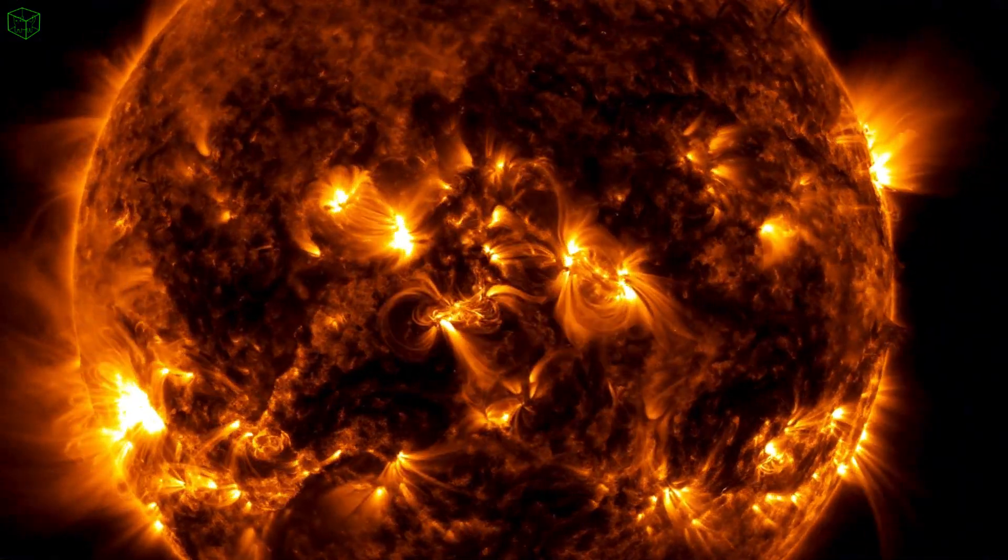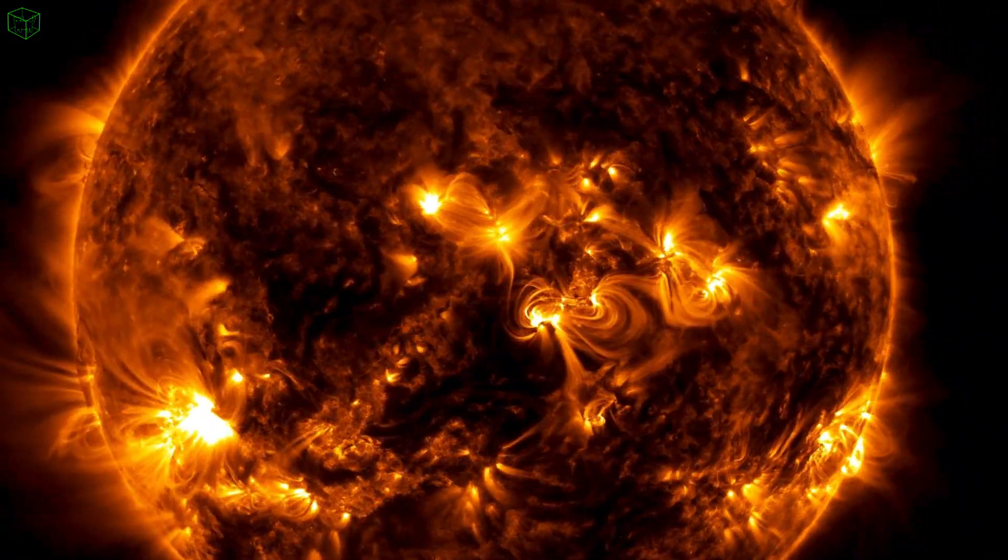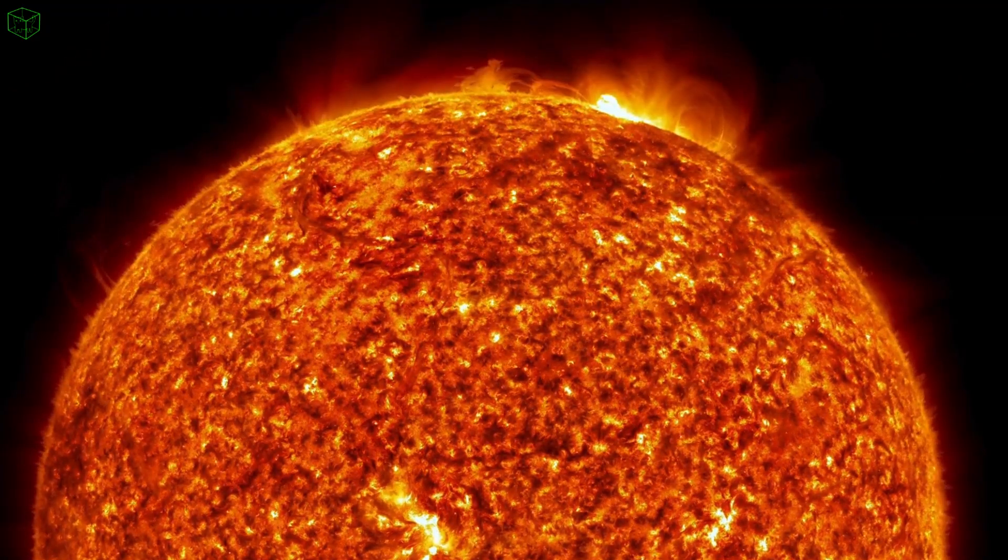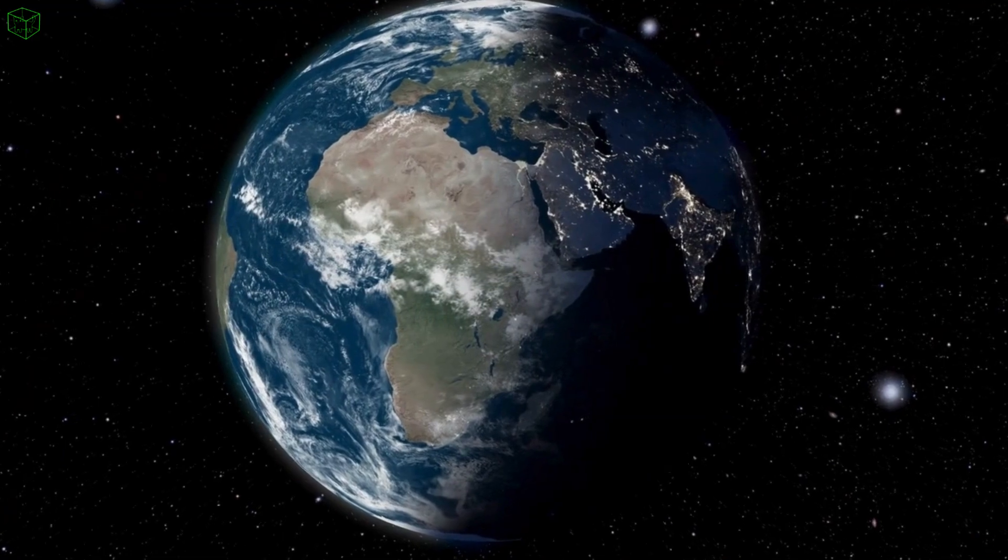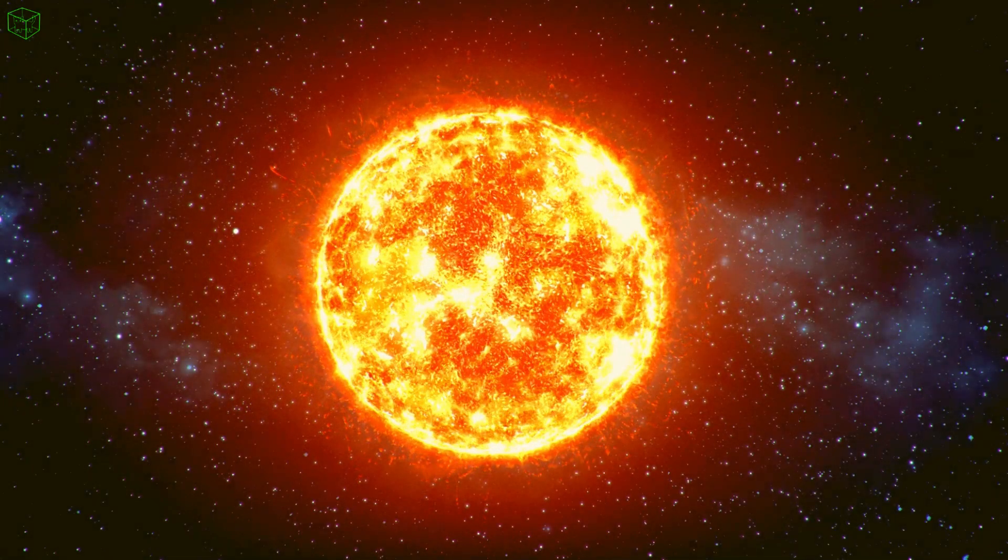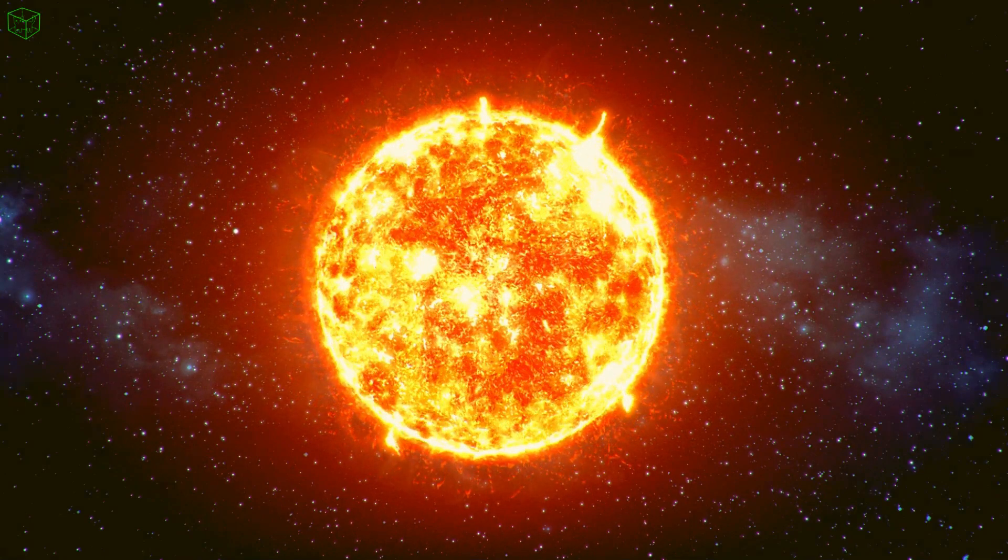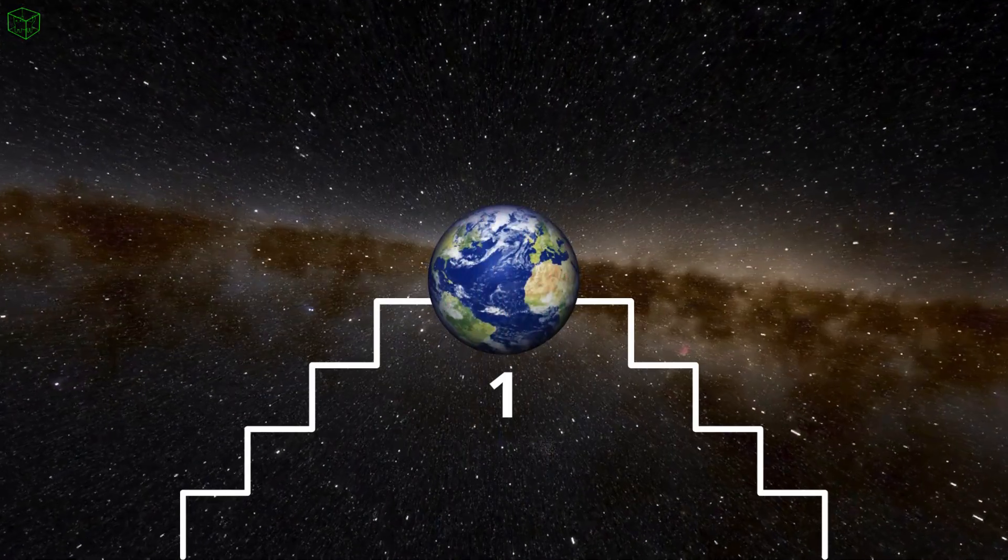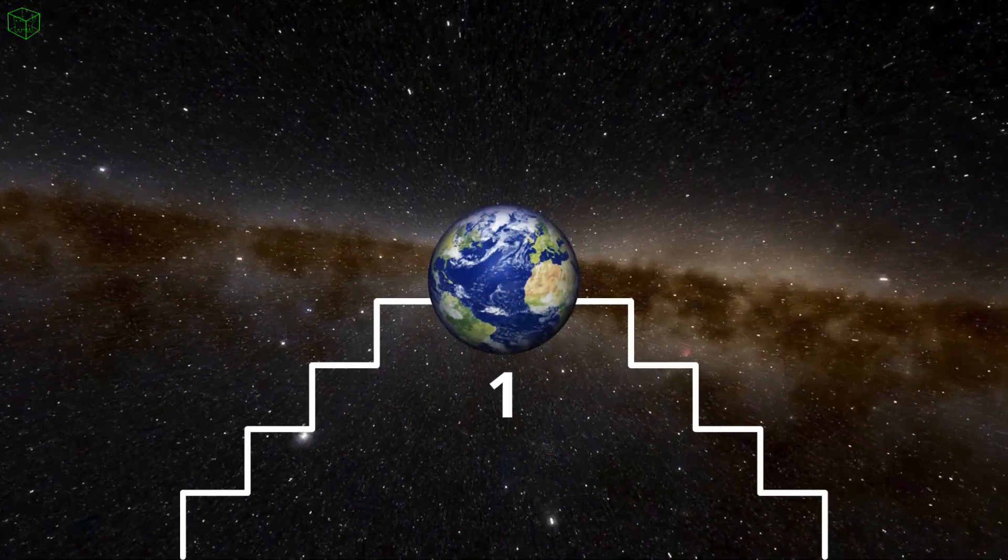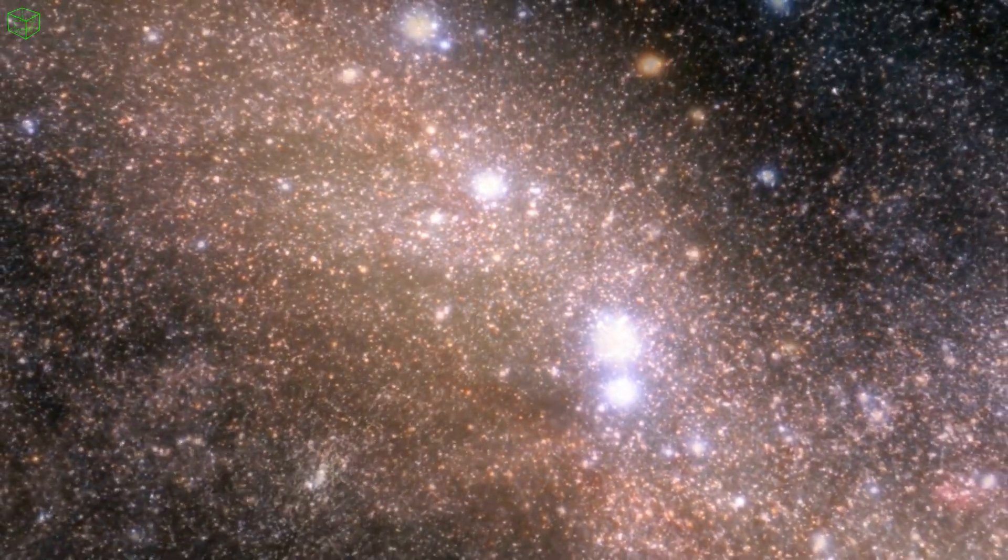The second alternative is even lonelier. Perhaps life around stars like the sun is an exception, and the emergence of intelligent life takes much longer than it did on Earth. Earth would be an exception, not a rule, and the true habitat for intelligent life would be red dwarfs, which remain habitable for a more extended period. If this is the reality, then not only are we the first in our galaxy, but we are probably the first civilization in the entire universe.